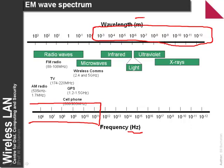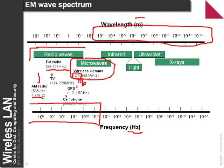Frequency is measured in hertz, wavelength is measured in meters. The lowest frequency is radio waves — AM radio up to 1.7 megahertz, FM radio up to 108 megahertz, then TV, cell phones, GPS, and then we move into microwaves. Typical frequencies we use are 2.4 GHz and 5 GHz — 11B and 11G use 2.4 GHz, and 11A uses 5 GHz, sitting somewhere around here in the spectrum.